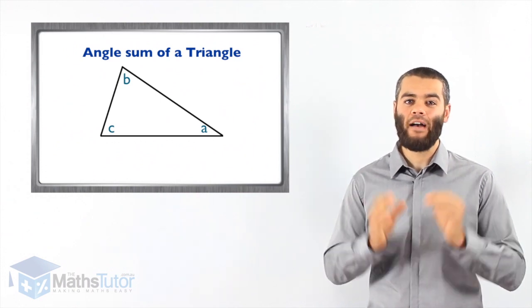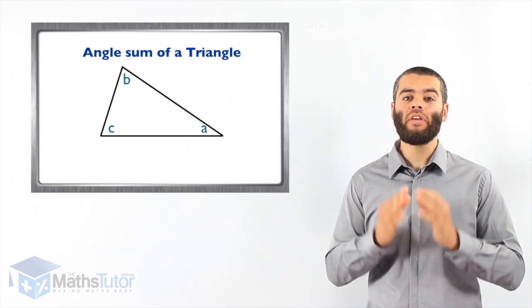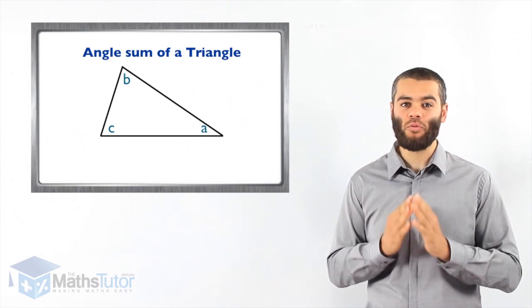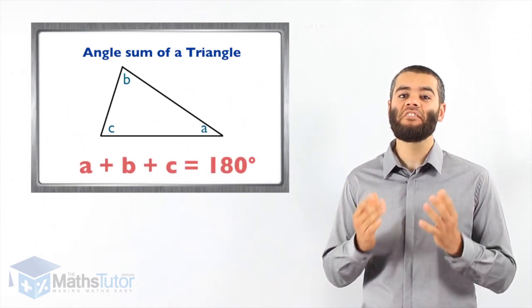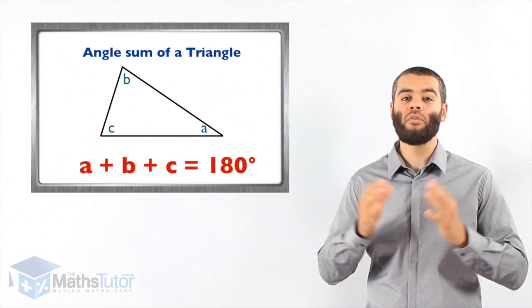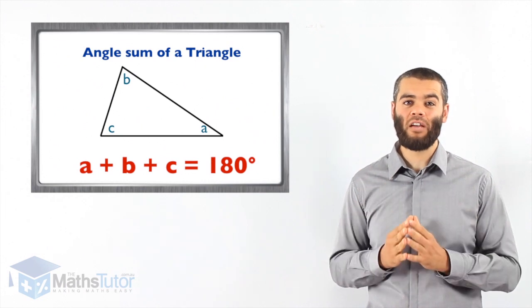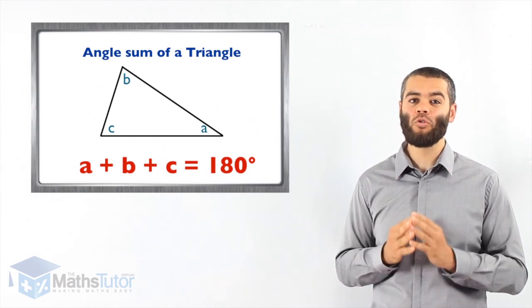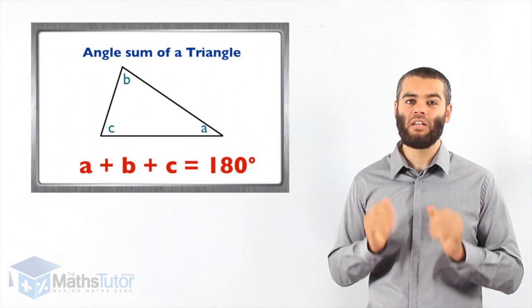Triangles, as you know, have three angles. All the angles add up to a special number. This number is 180 degrees. So all triangles, in all their shapes, in all their sizes, their three angles will always add up to 180 degrees.